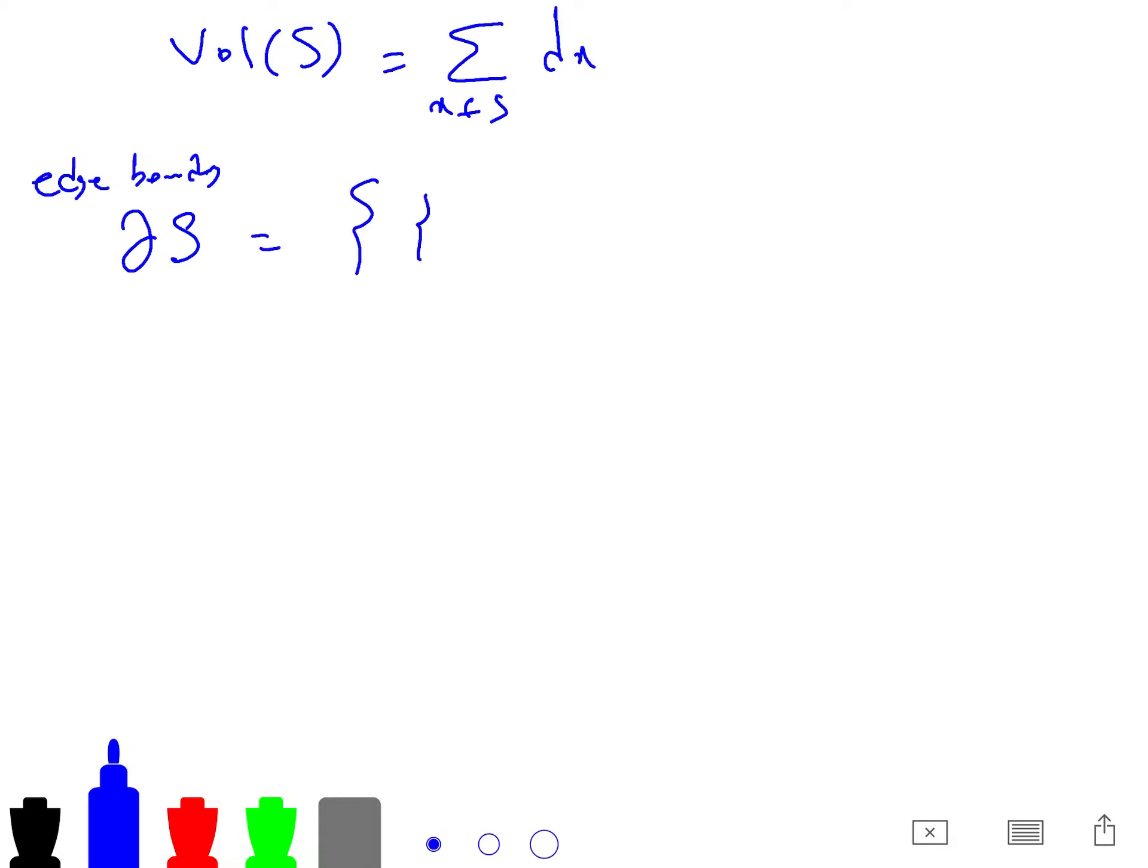So when I say the volume of your set S is just sum of degrees, so this is a great measure. And the edge boundary of S is, so this is the edge boundary, is all of U and V, all of the edges,